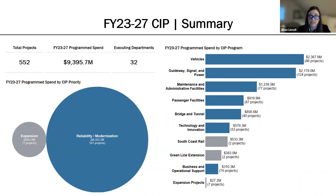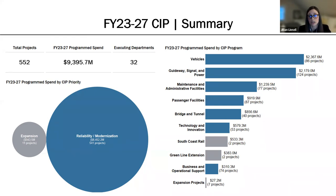Jumping into what is included in the five-year plan, the proposed 23 to 27 CIP includes 552 capital projects representing $9.4 billion in program spend, with projects being executed by 32 MBTA departments. Reliability and modernization investments account for the majority of projects and expected spend across the five-year window. However, there are also 12 expansion projects representing just under a billion dollars of spend.